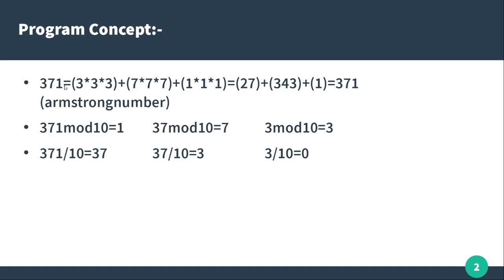The number is 371. The remainder from 371 modulo 10 is 1, so the digit value is 1. Then you can cube it — that is 1³. Then for 371, taking it again, the next remainder is 7. So the digit value is 7. Then the number becomes 37 with the remaining value. Now the three values and the number is 3.